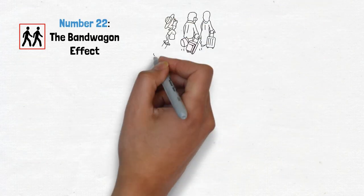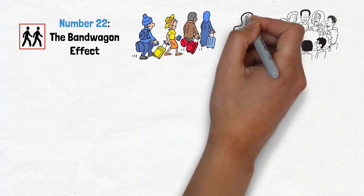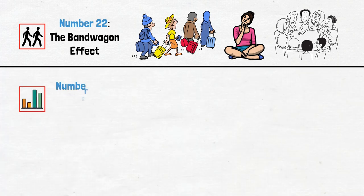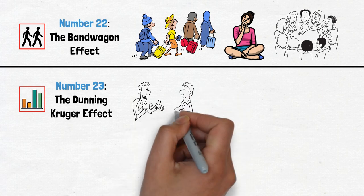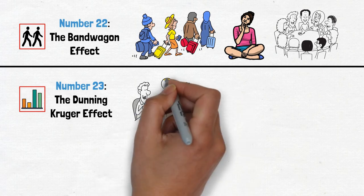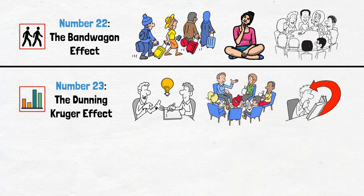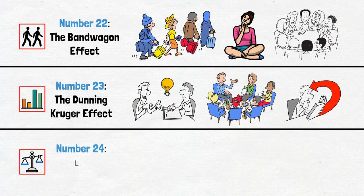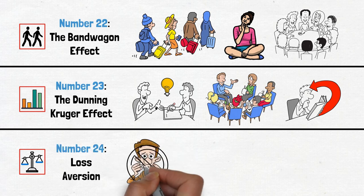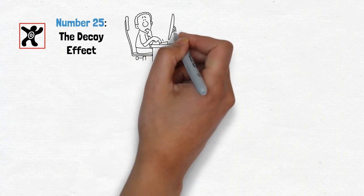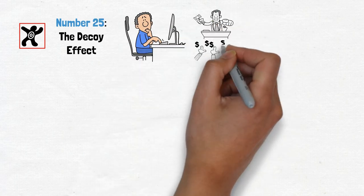Number 22, the bandwagon effect. Just because everyone's doing it doesn't mean you should too. Make decisions based on your own values, not societal pressure. Number 23, the Dunning-Kruger effect. The secret to success is humility, but knowledge is power. Talk to people with knowledge and never stop educating yourself. Number 24, loss aversion. Don't let fear hold you back. Focus on the potential gains and seize opportunities with confidence.